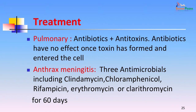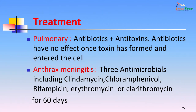For cutaneous anthrax, antibiotics used are doxycycline or ciprofloxacin. In pulmonary anthrax, antibiotics plus antitoxins are used. Antibiotics have no effect once the toxin is formed and has entered the cell, so early diagnosis is critical. A common complication of pulmonary anthrax is anthrax meningitis, which requires three antimicrobials including clindamycin, chloramphenicol, rifampicin, erythromycin, or clarithromycin for 60 days. Anthrax meningitis is the most difficult clinical manifestation of anthrax to treat.